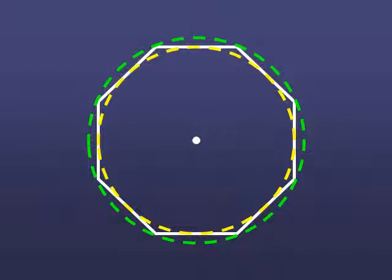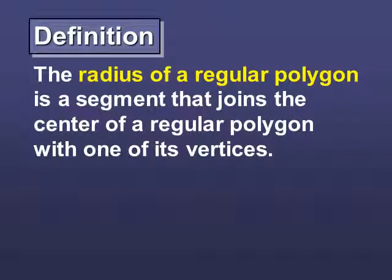That center is going to be very important to us here in the next couple definitions. So, we know what the radius of a circle is. It goes from the center to the circumference, right? Well, the radius of a regular polygon is the segment that joins the center to one of its vertices.